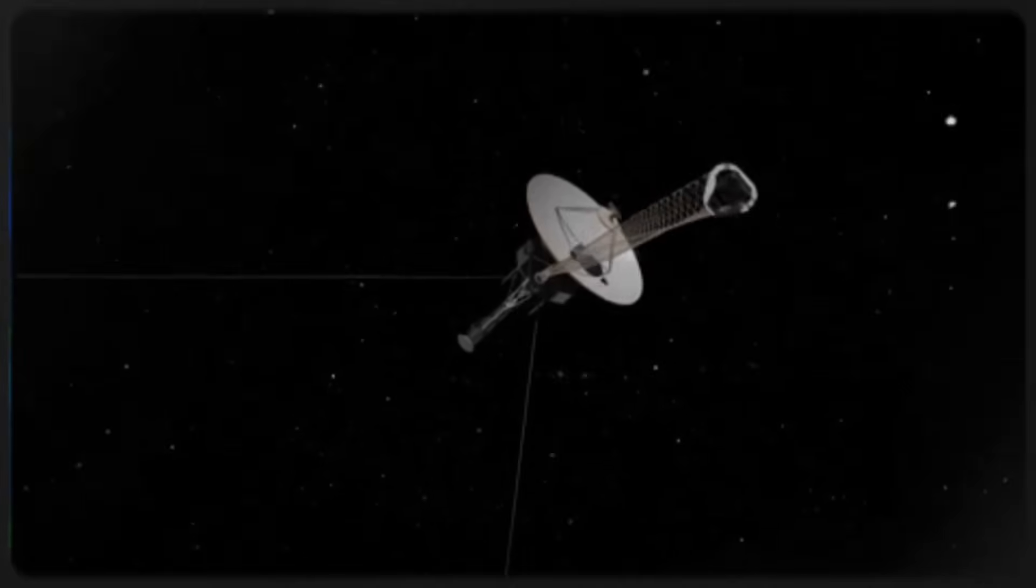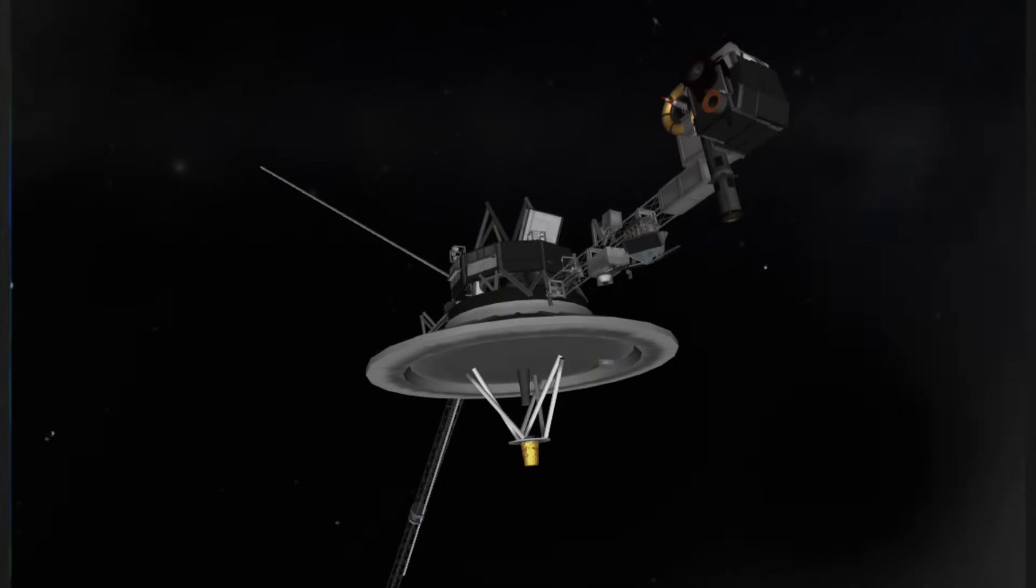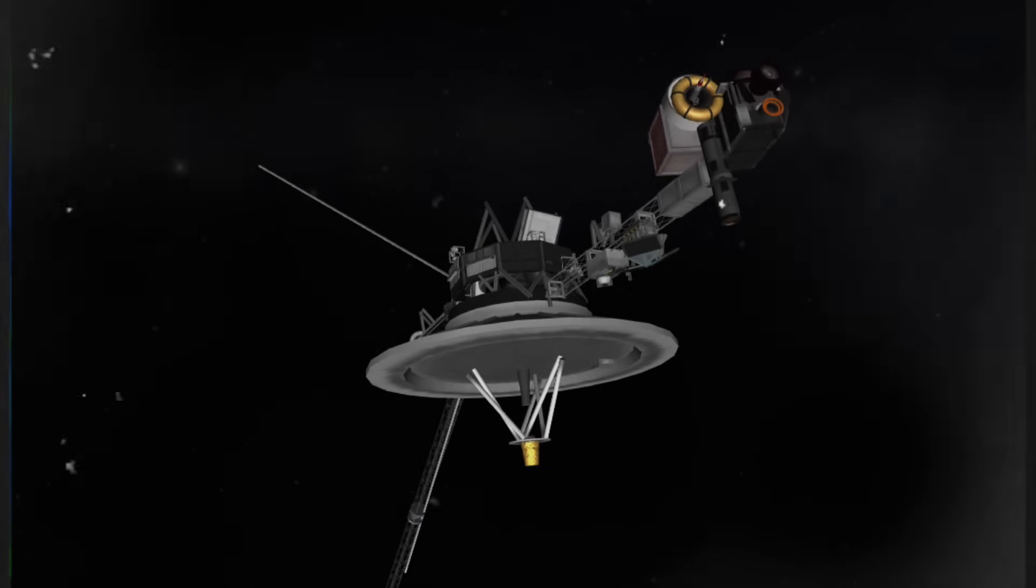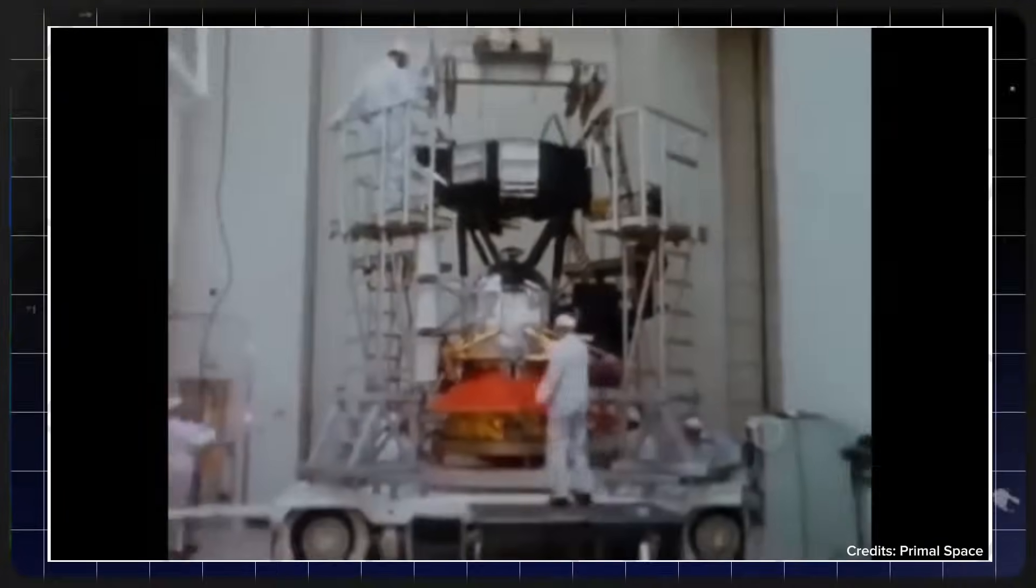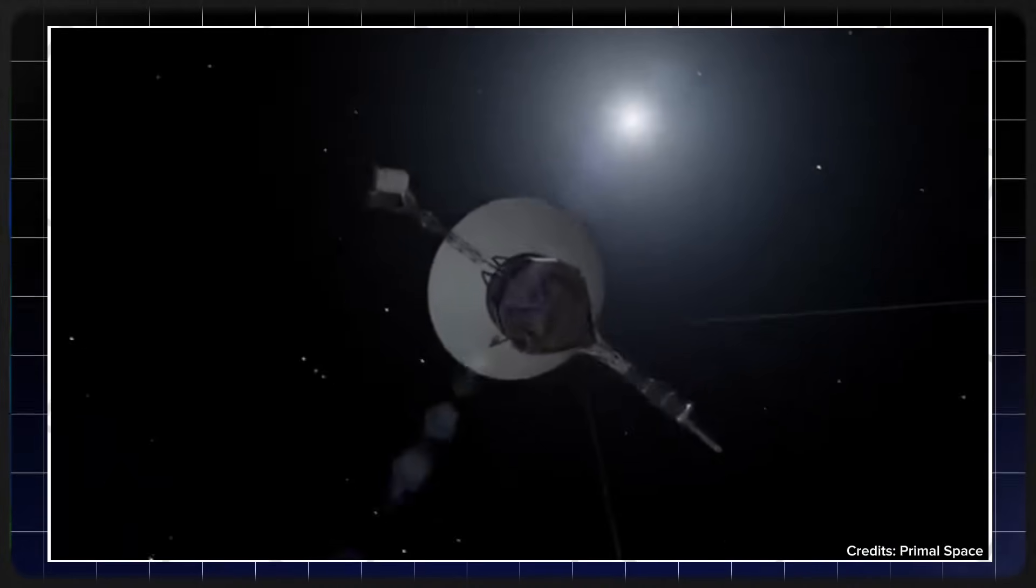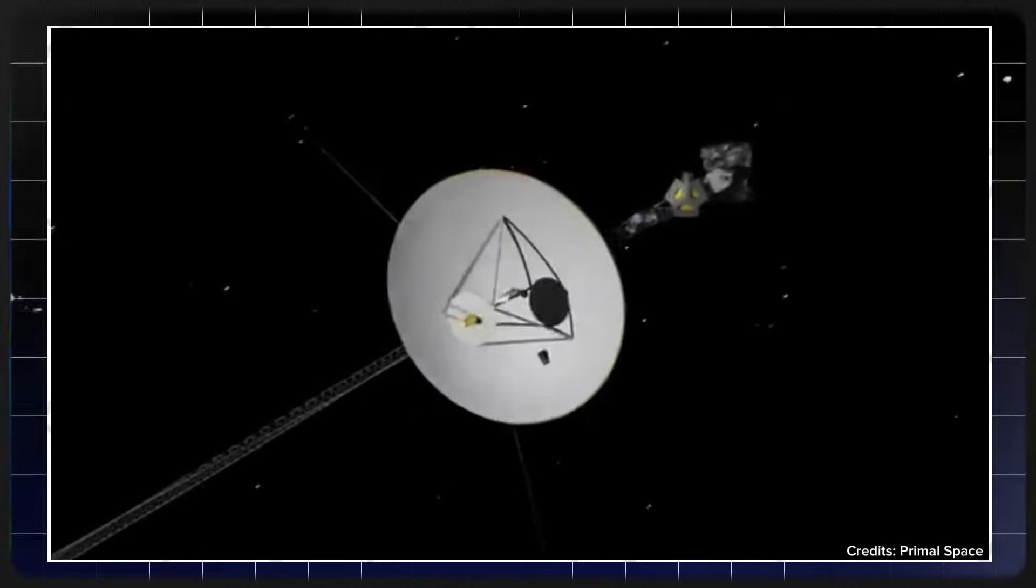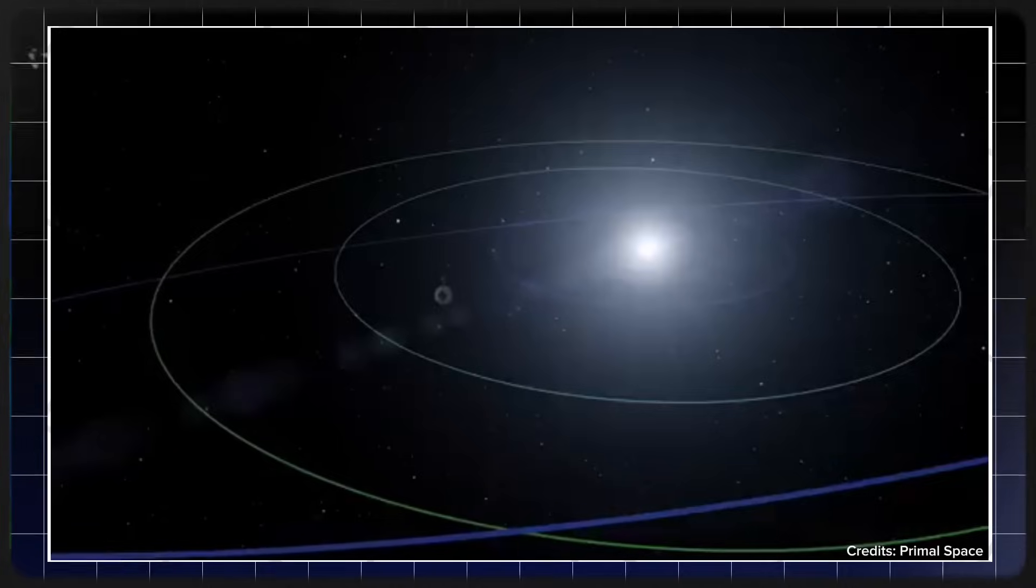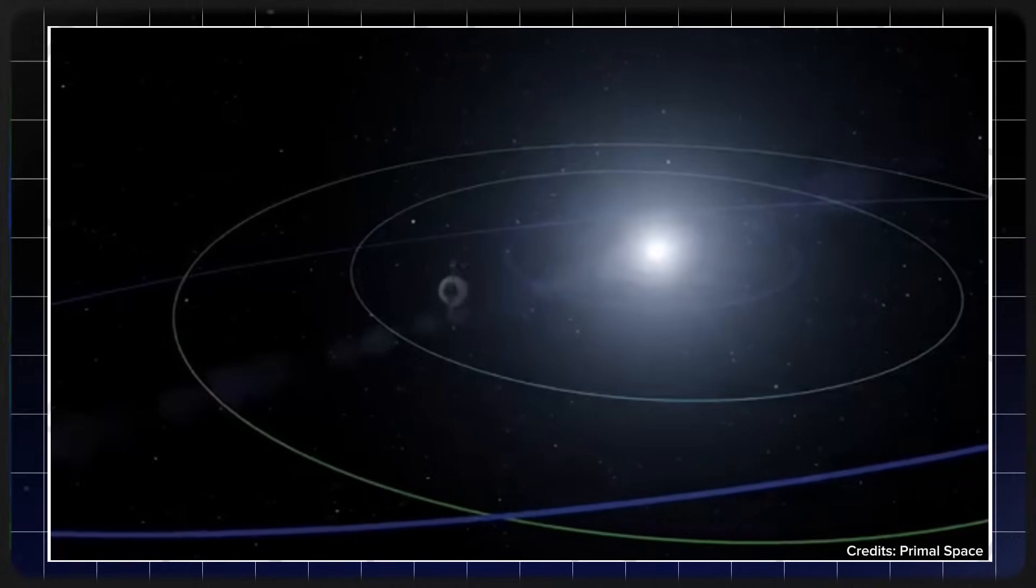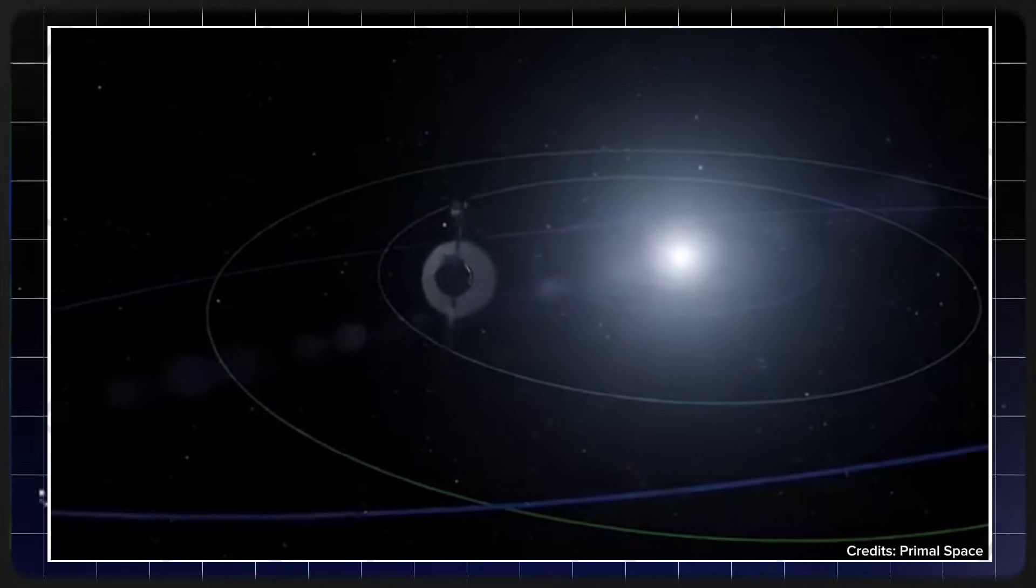However, this seemingly simple command had an unintended consequence. It triggered Voyager 1's fault protection system. This system, designed to safeguard the spacecraft from potential malfunctions, immediately initiated a series of protective measures. In response, the fault protection system shut down Voyager 1's primary X-band radio transmitter, which had served as the spacecraft's primary communication link with Earth for decades.